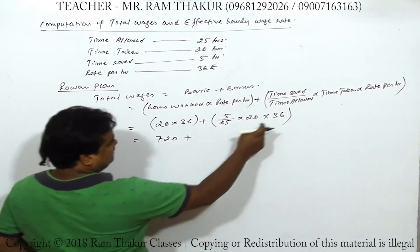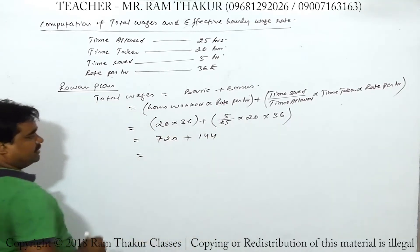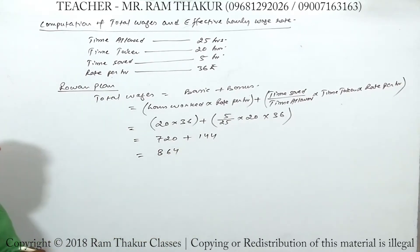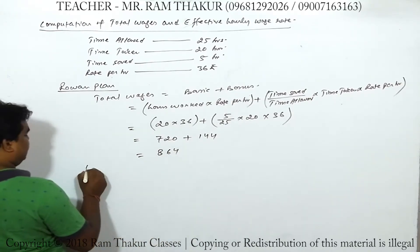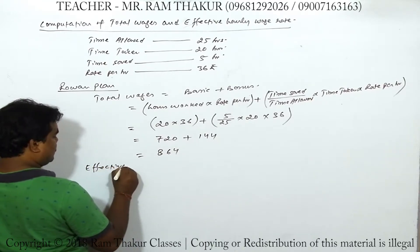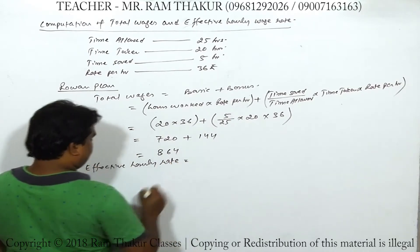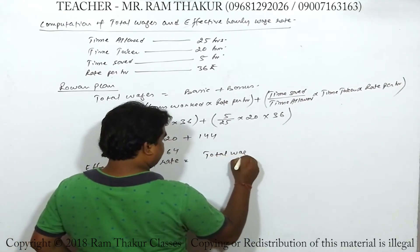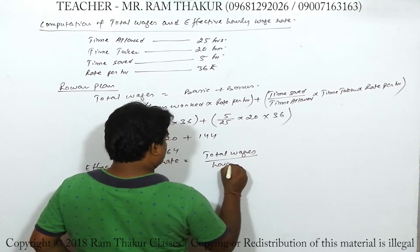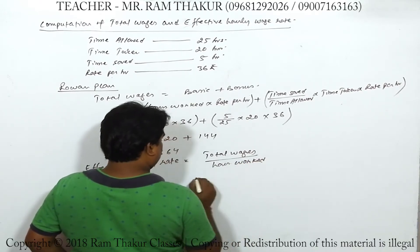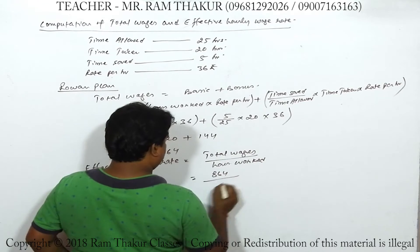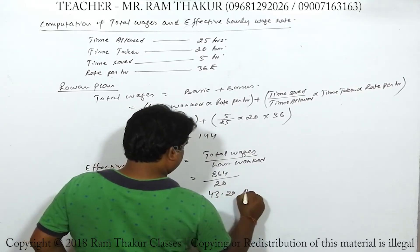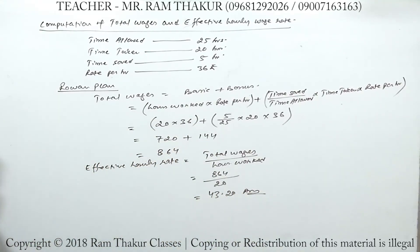Total wages under Rowan plan = 720 + 144 = 864. Effective hourly rate = Total wages ÷ Hours worked = 864 ÷ 20 = 43.20 rupees per hour.